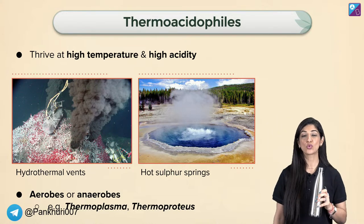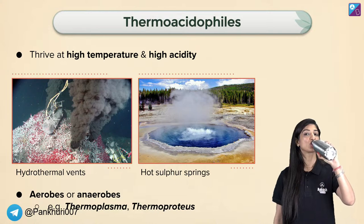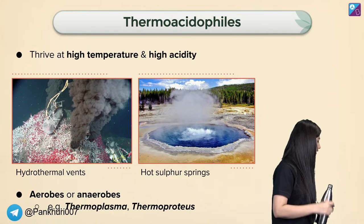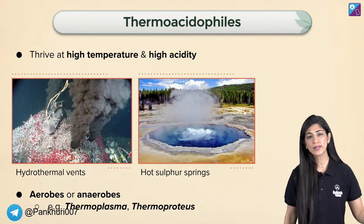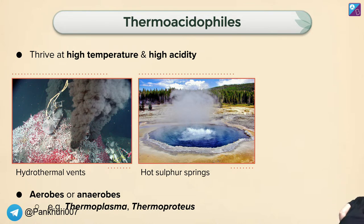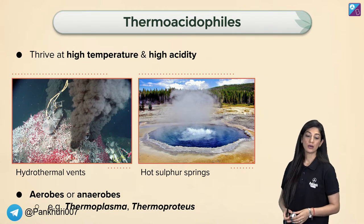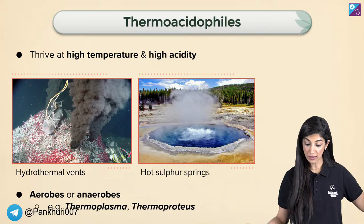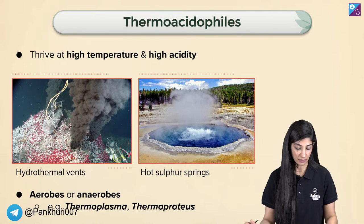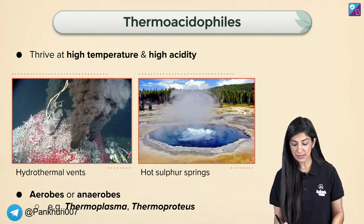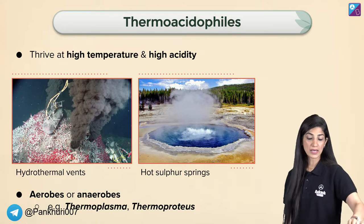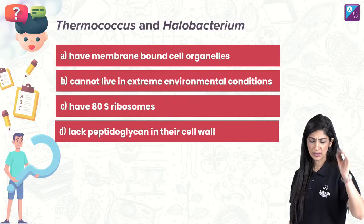Other organisms cannot survive there. Thermoacidophiles have dual power — they can tolerate high temperature and also high acidity or low pH. Examples include Thermoplasma and Thermococcus, though examples are not commonly asked in exams nowadays.